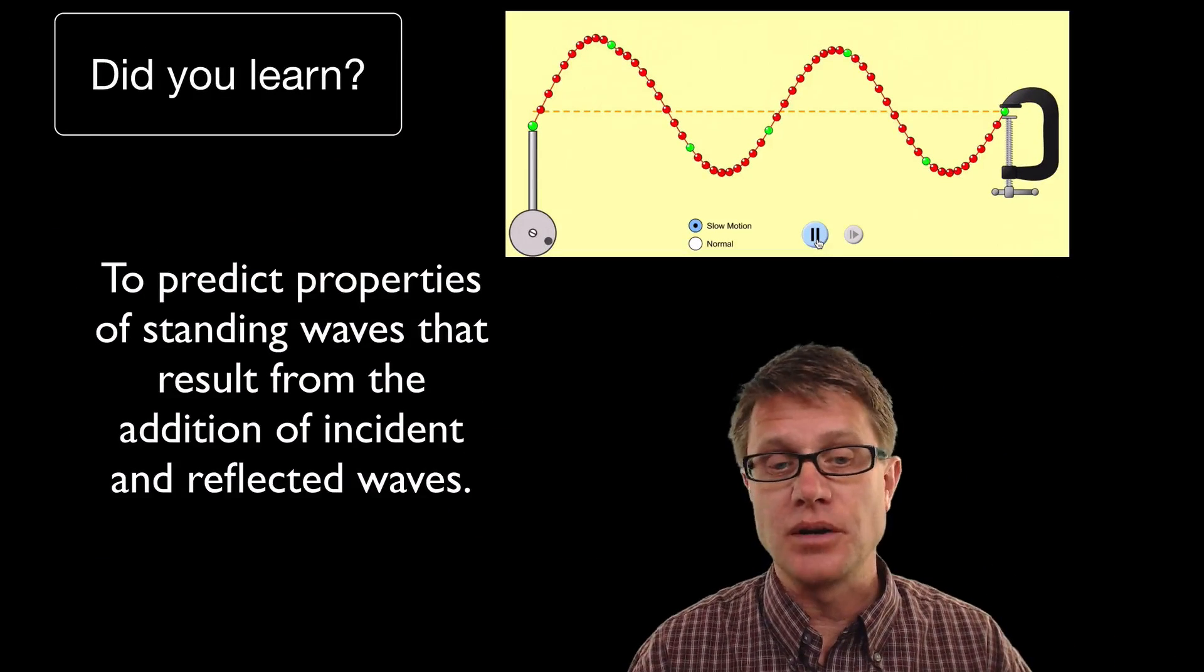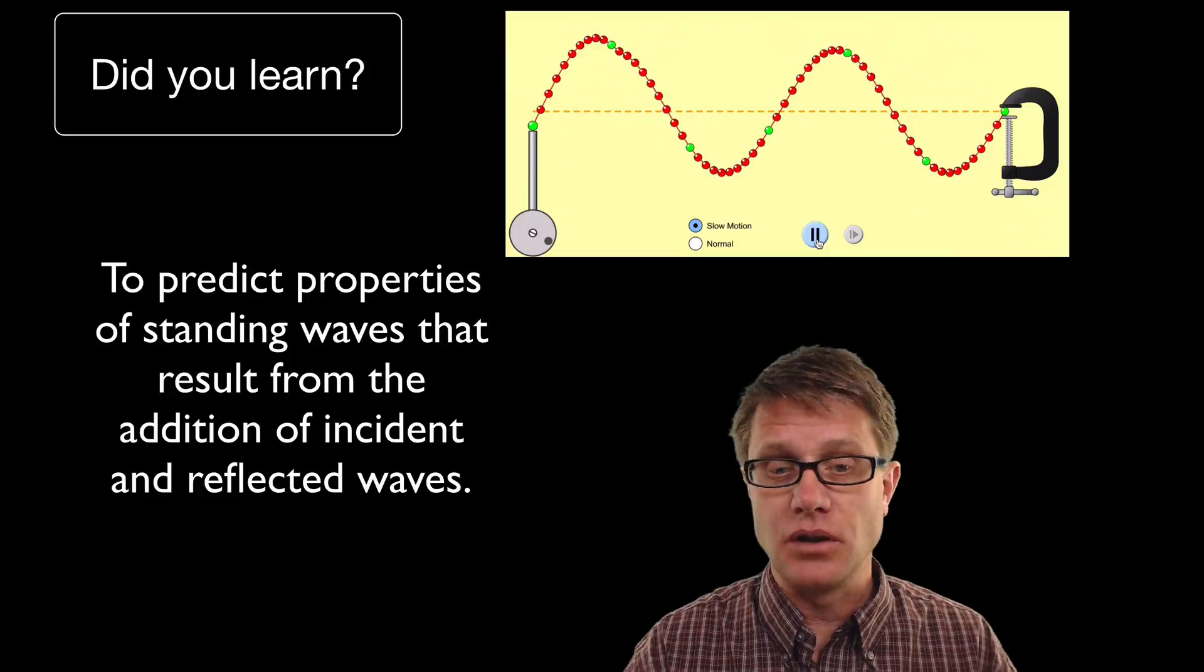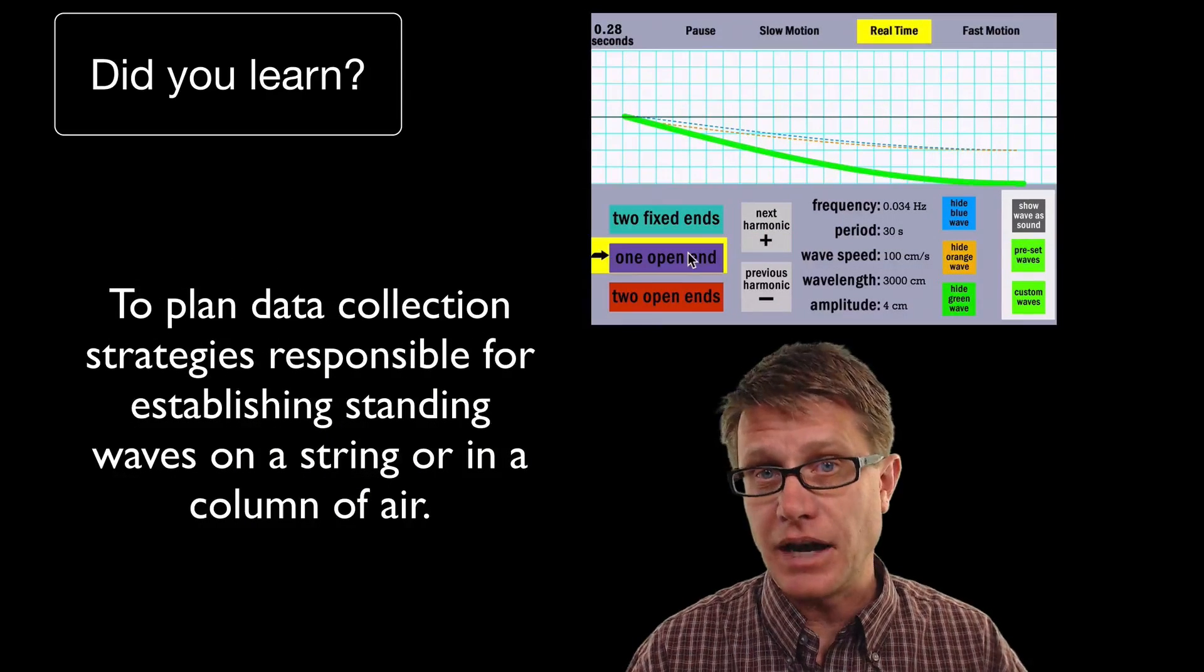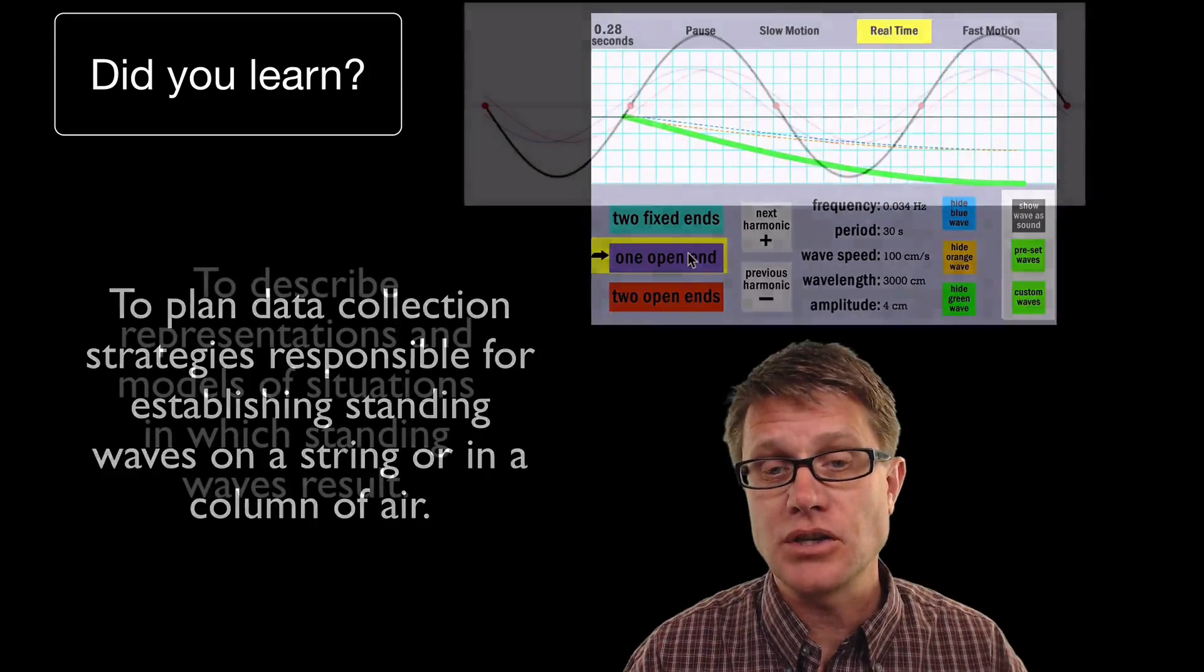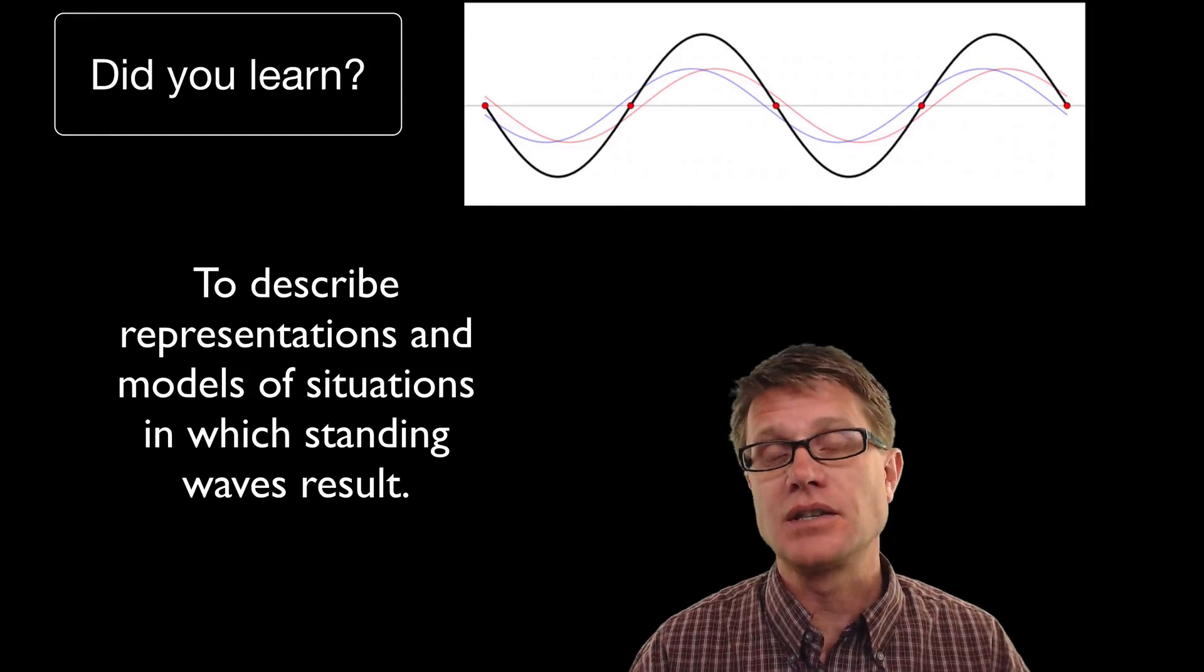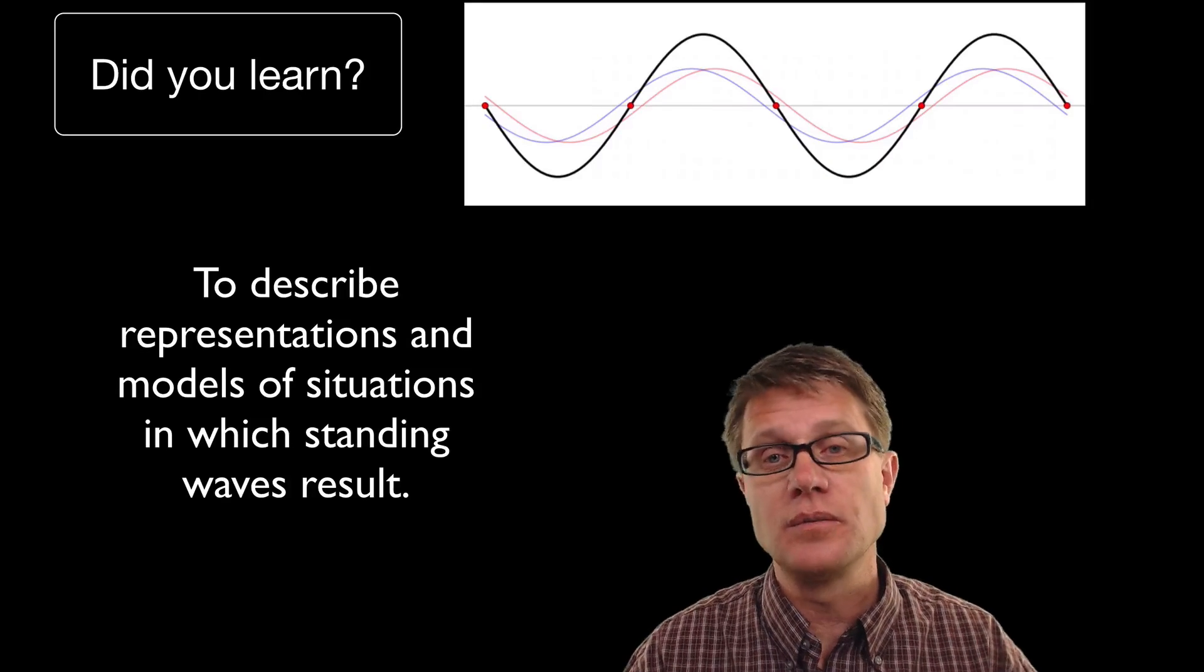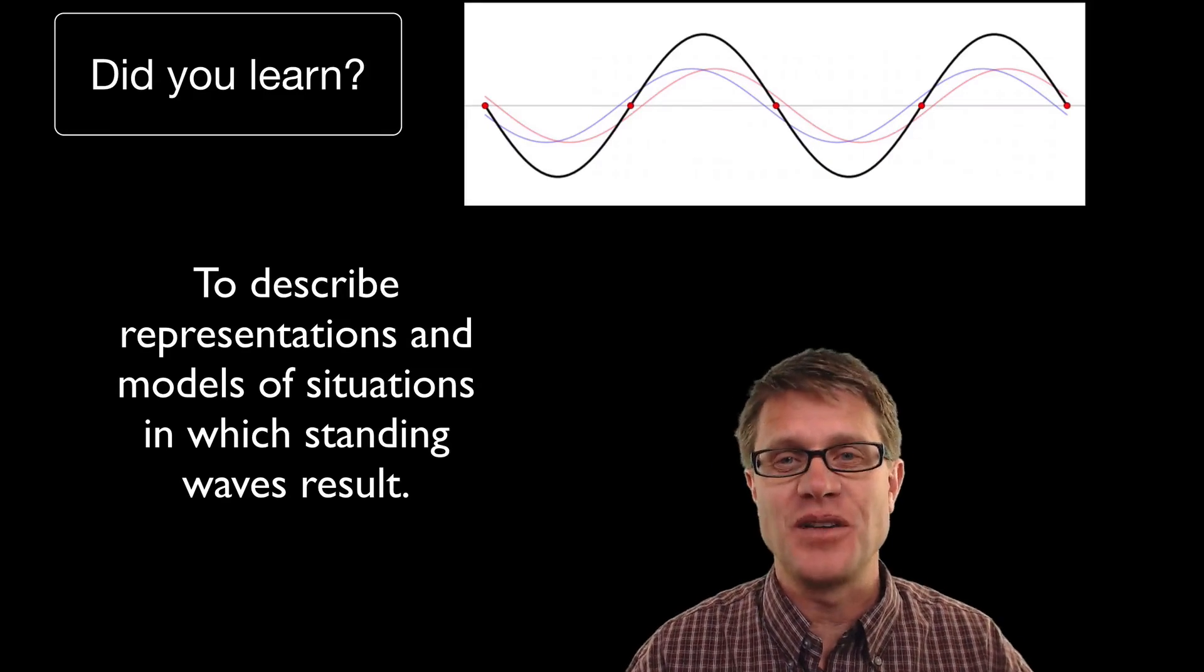And so did you learn to predict the properties of standing waves? They result from reflection of these traveling waves. Could you collect data? Again I used a simbucket simulation to do that. And then finally could you describe examples of when this occurs, standing waves. Musical instruments are good. Baseball bats are great. And I hope that was helpful.